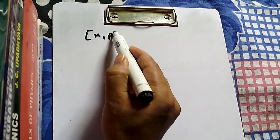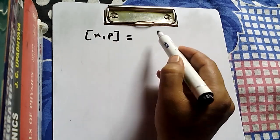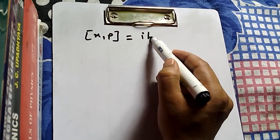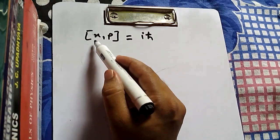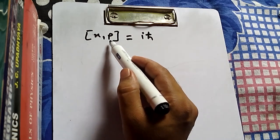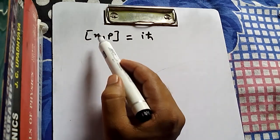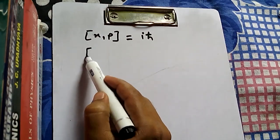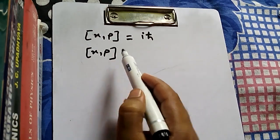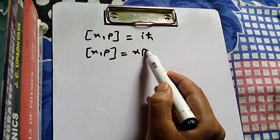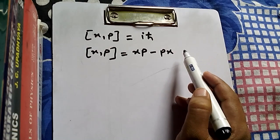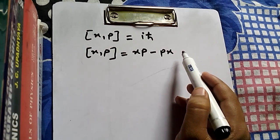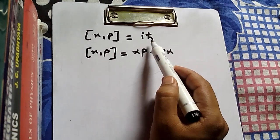First, let me show you the commutation relation between two quantum mechanical operators: the commutation of X and P, where X is the position operator and P is the momentum operator. This equals iℏ. Both X and P are quantum mechanical operators, and their commutation relation gives us iℏ.